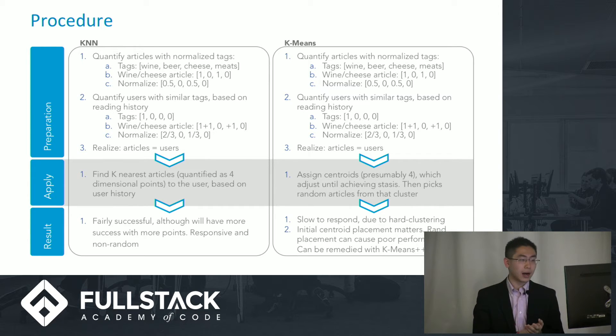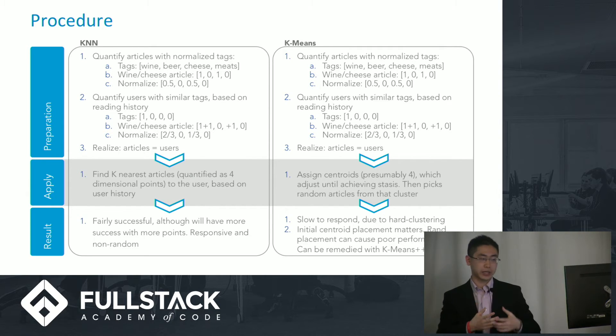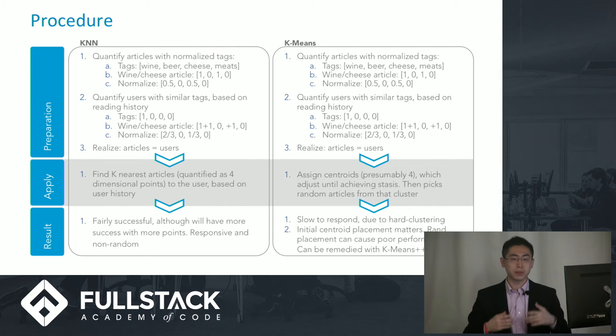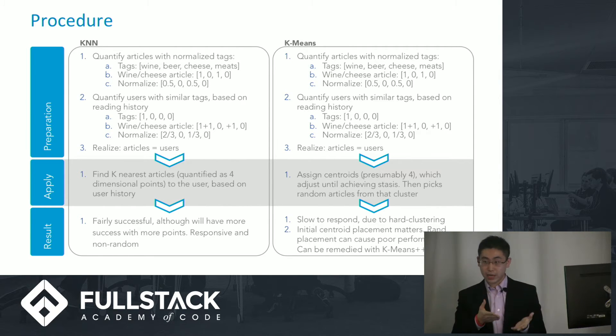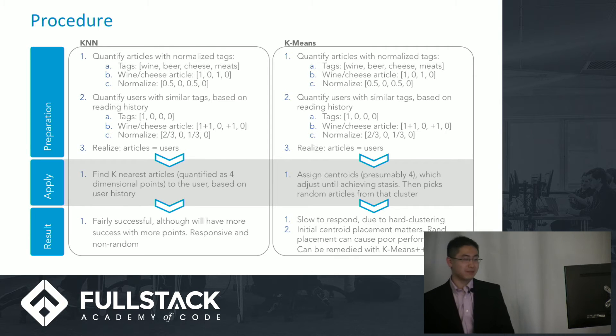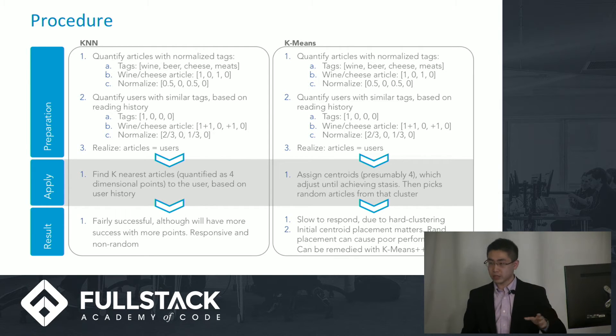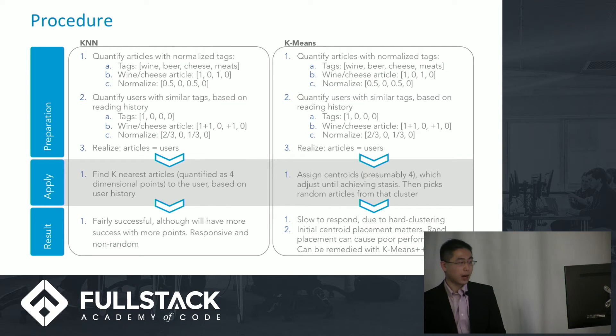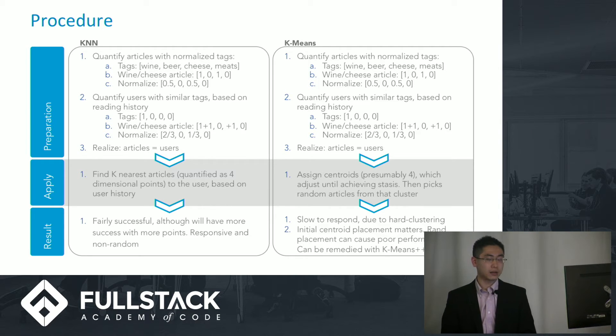It's an array of, first element being wine, second beer, third cheese, fourth meats. Very simple. And what's going to happen is articles are going to have this particular tag. If it's about wine and cheese, you're going to have a one, zero, one, zero. One being yes or no. Easy enough. However, you want to normalize it because you want to have everything add up to one in the end. This is all percentage-based.